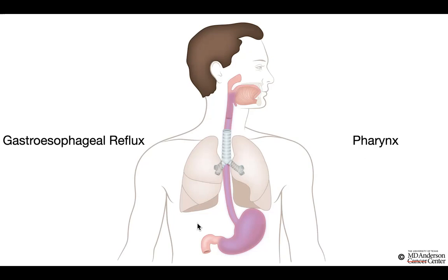If the acid that goes up enters into the lung, it can cause irritation and spasm of the airways. Patients may have symptoms of asthma, and if the acid reflux is too much and they aspirate deep into the lungs, it can result in aspiration pneumonia.